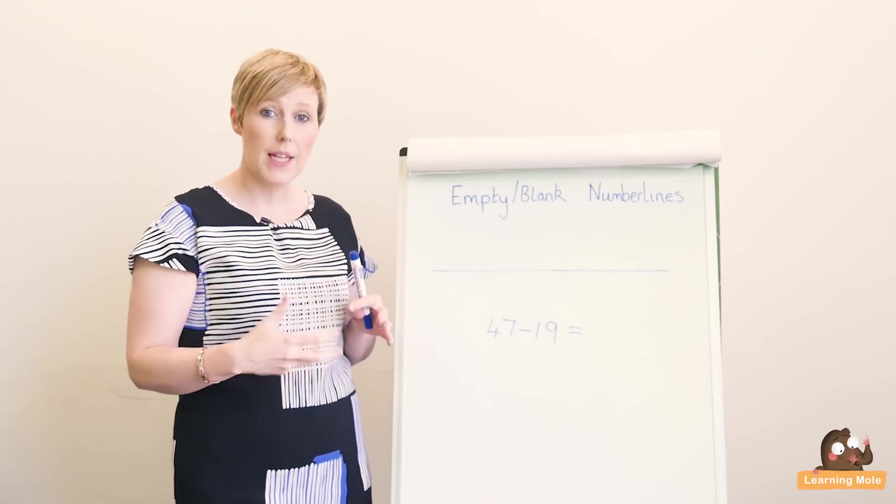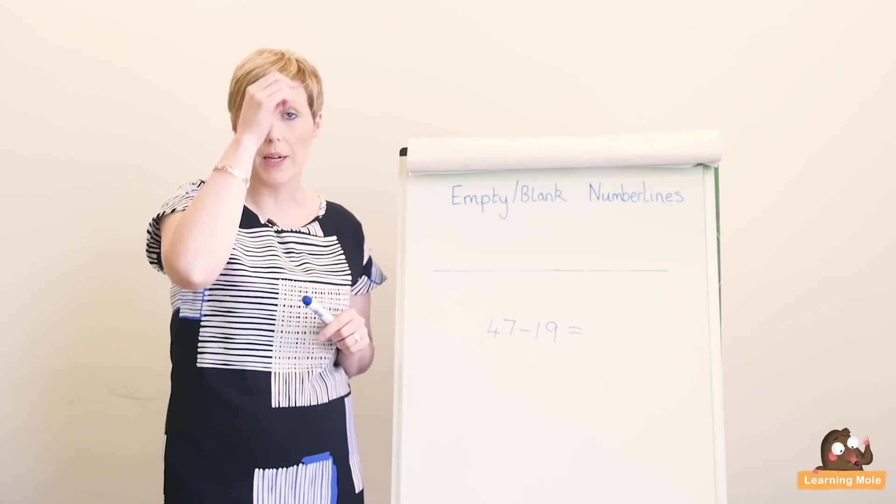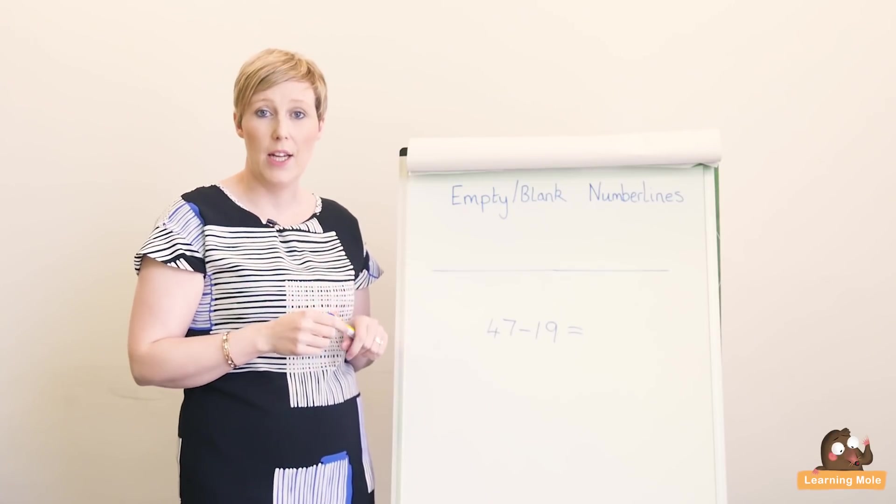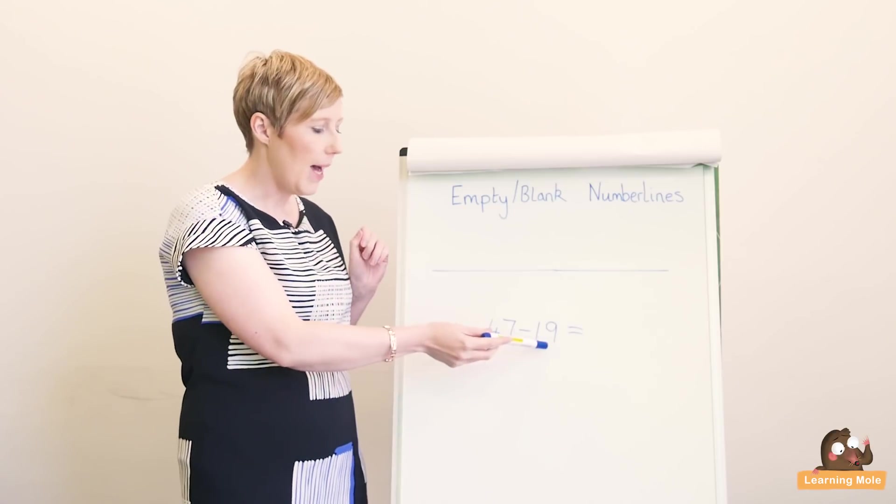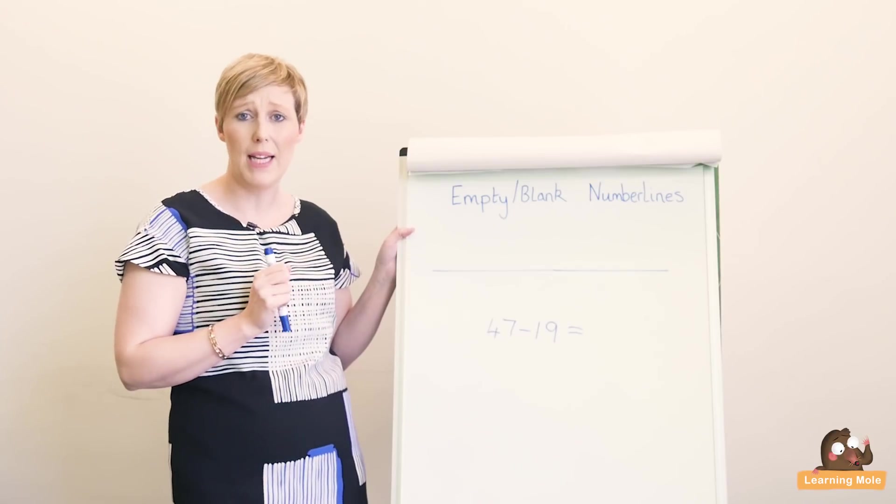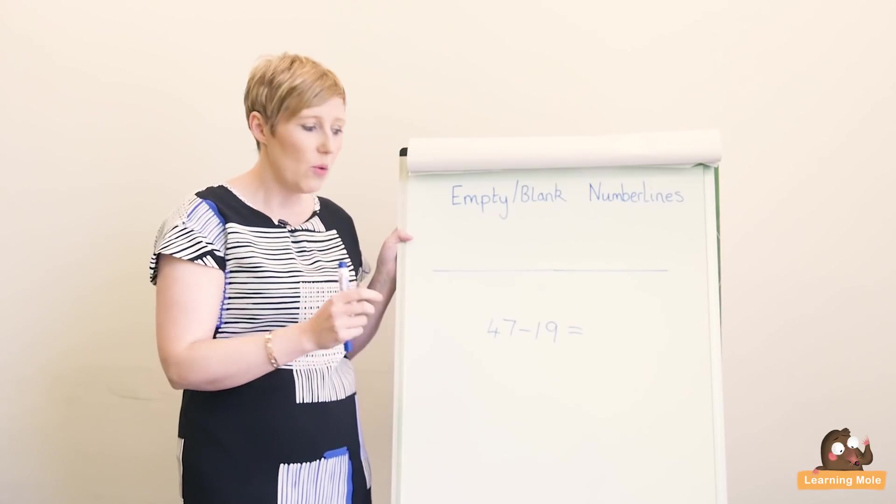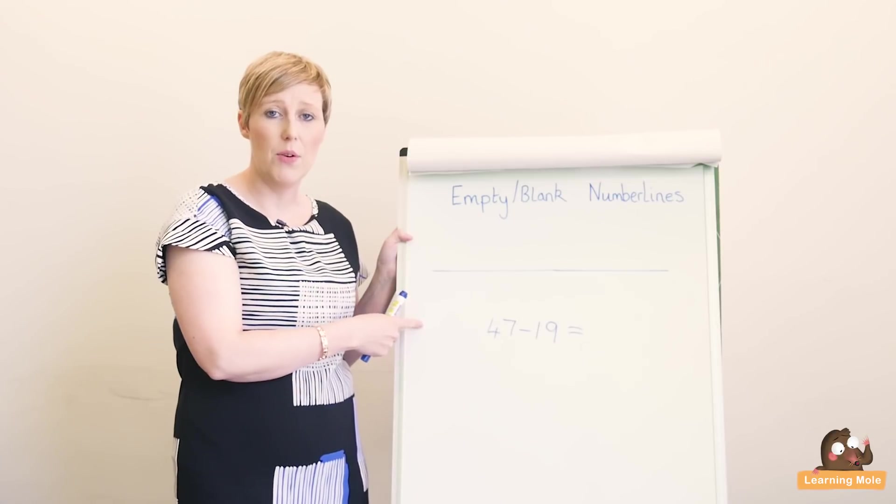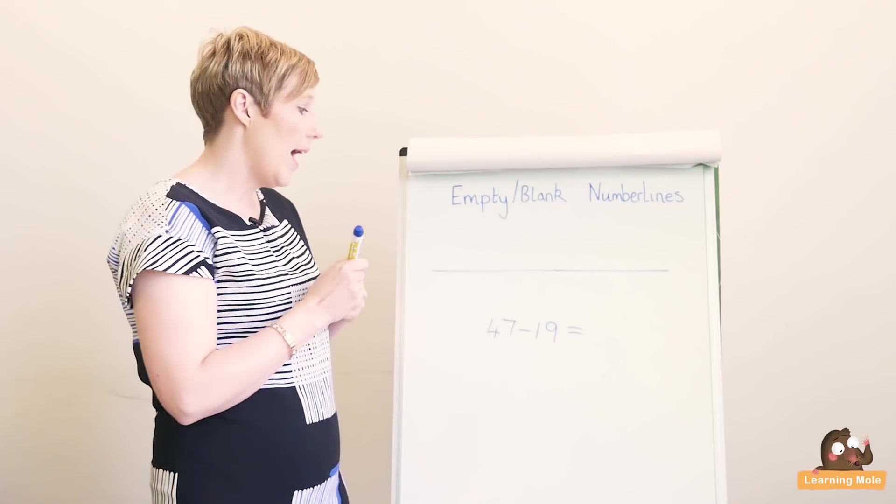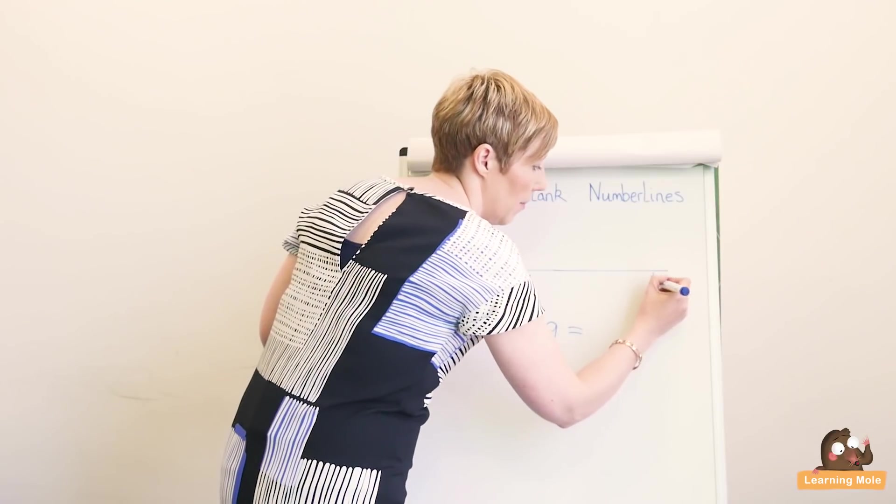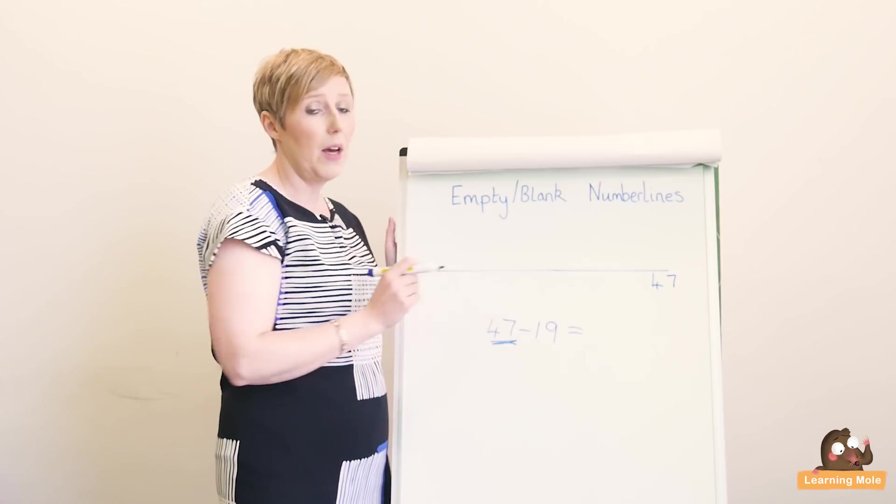Your child may also be faced with something more tricky, not just a single digit—they're now taking away a double digit or two digit number. This is where we talk about bridging through 10, where they can start to bring in their counting steps as well, so they're not counting back 19 steps. Number lines are not really designed for counting back 19 steps. There are loads of chances for error, so this is not what we would be wanting to use this for. We would be wanting to use this in two steps or steps of 10.